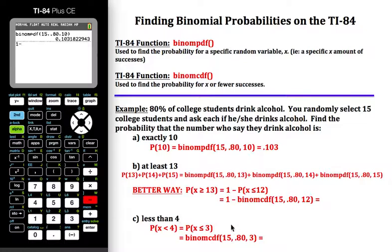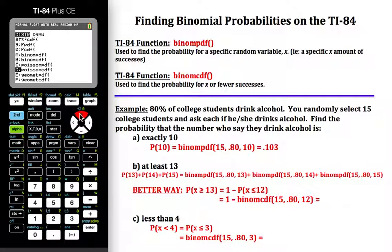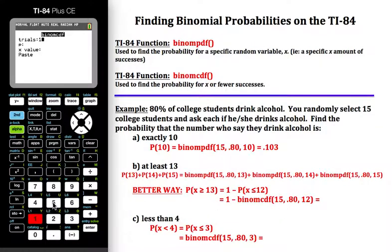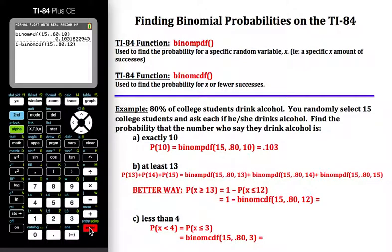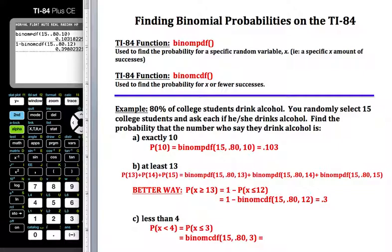So that would be 1 minus the binomCDF function. Press second, distribution, and arrow up again to get to binomCDF quicker. On this one I am selecting from 15 students, the probability is 0.80, and my x value is 12. Hit enter, and that value gives us 0.398. That's an example of how you can utilize the complement with the binomCDF function.